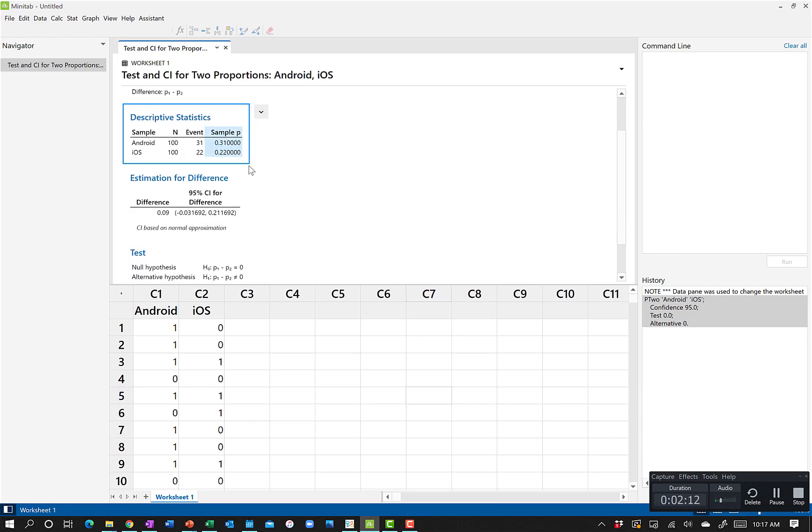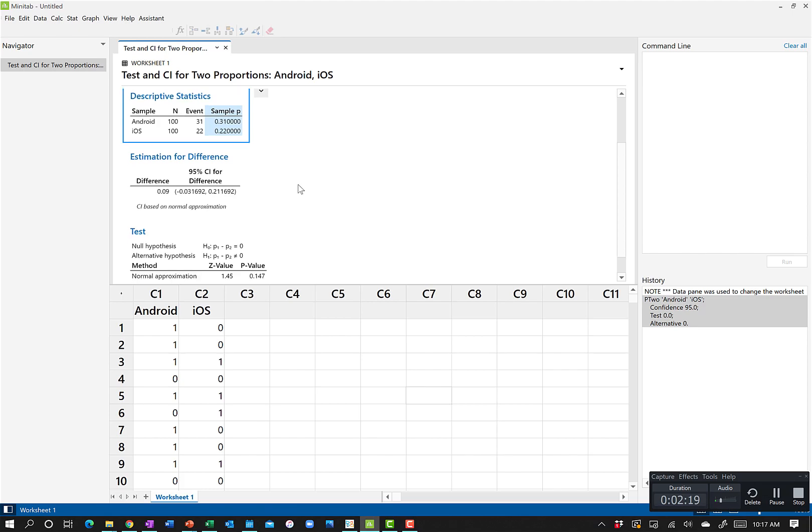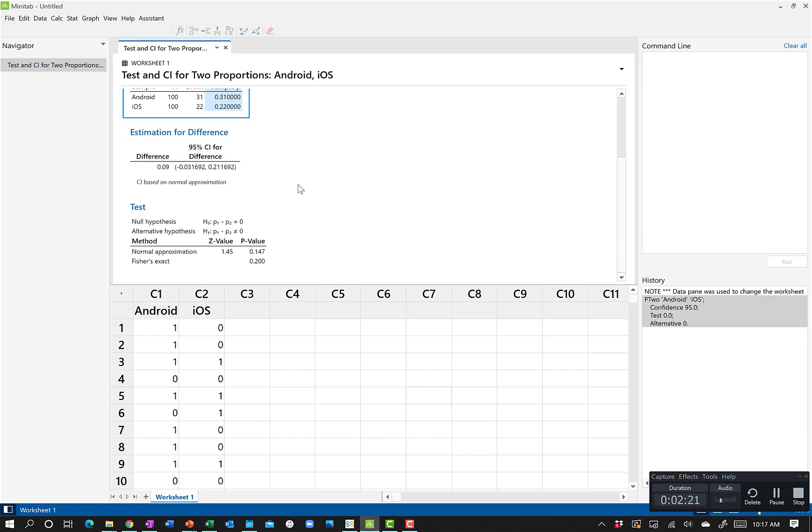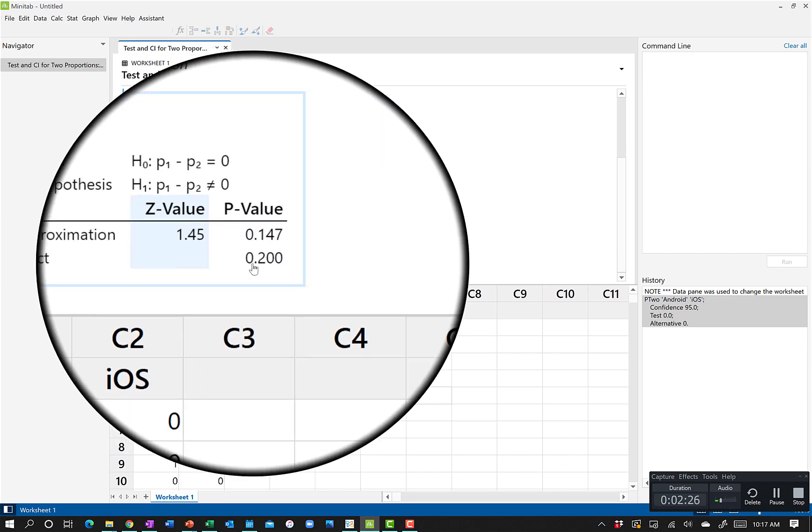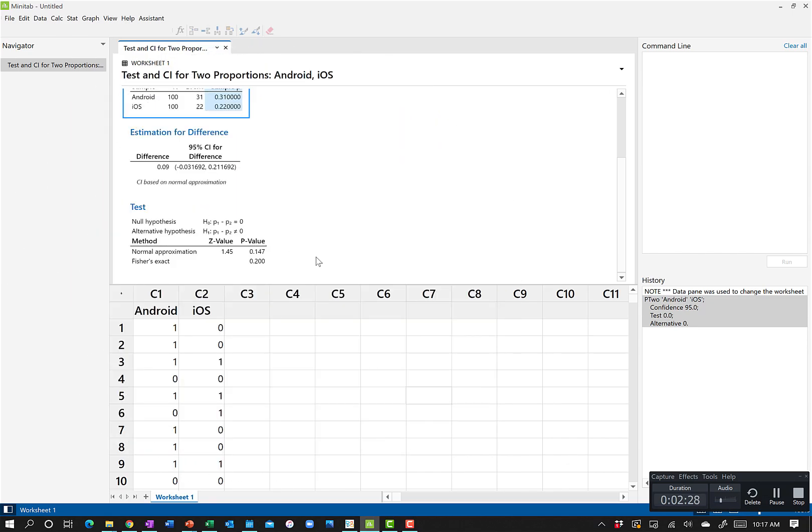Hit Go. It tells us that we have 31% of Android users turned on the feature and 22% of iOS users did. Down here, where we look at the actual test results, our Z value is 1.45, so our p-value is 0.147. 0.05 is the number we're looking for. That would not be significant. So even though 31% of Android users turned on the feature and 22% of iOS users did, it's not statistically significant at the 0.05 level.